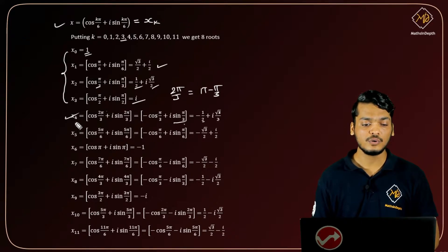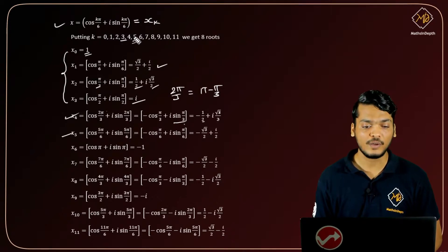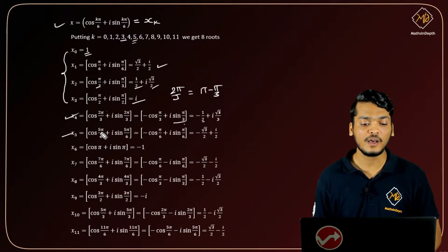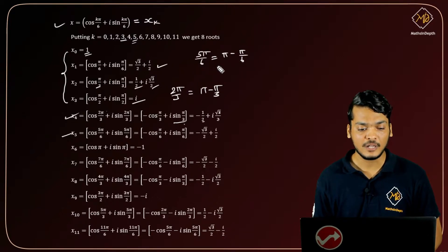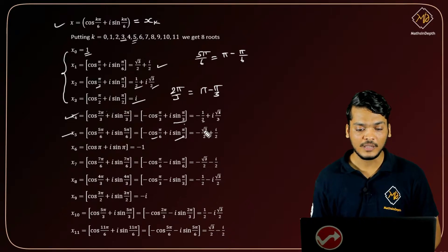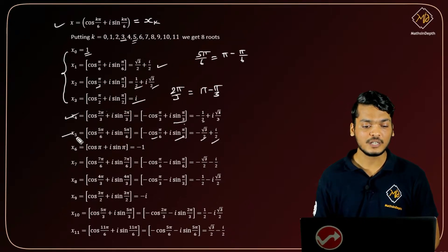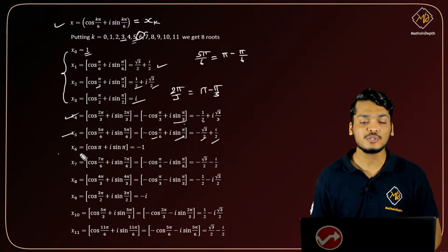For k = 5: we get 5π/6, which can be written as π - π/6. So cos(π - π/6) = -cos(π/6) and sin(π - π/6) = sin(π/6). Therefore cos(π/6) = √3/2 and sin(π/6) = 1/2, giving the 6th root as -√3/2 + i/2.